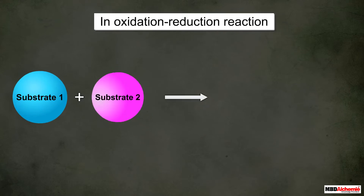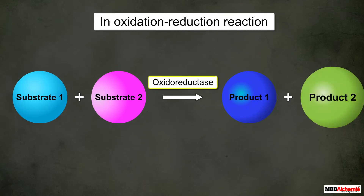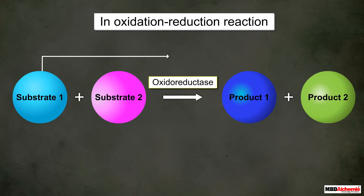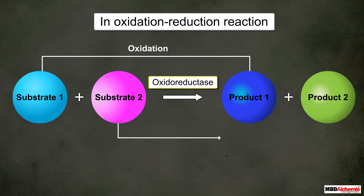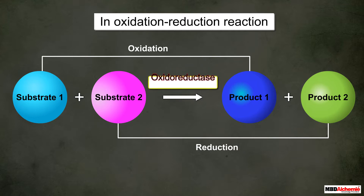In certain cases, enzymes are also named on the basis of the type of reaction they work in. For example, in an oxidation-reduction reaction, the enzyme that catalyzes the oxidation of one substrate and reduction of another substrate simultaneously is called oxidoreductase.